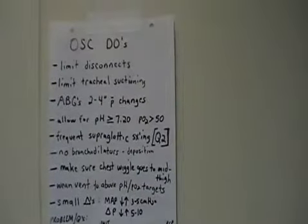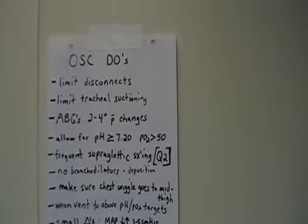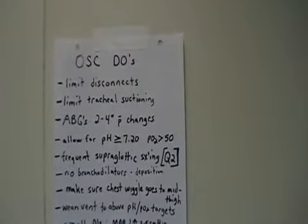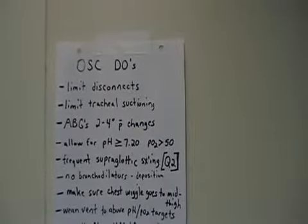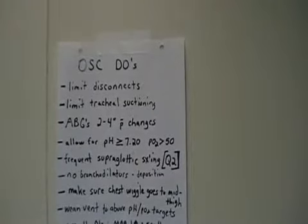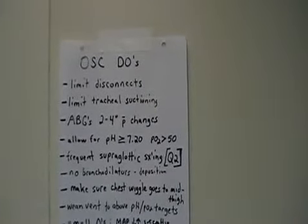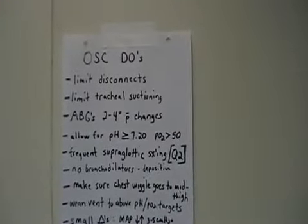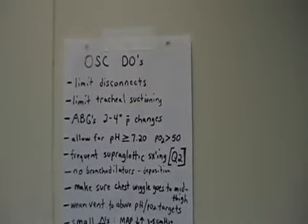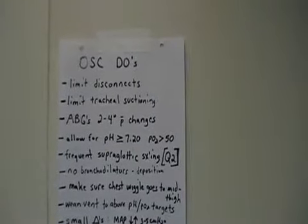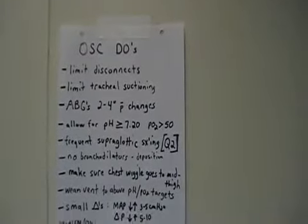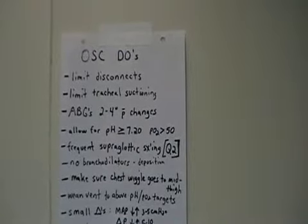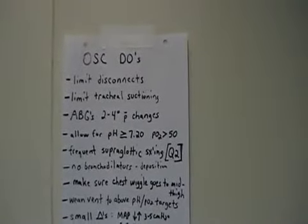Tips on the oscillator: you want to limit your disconnects because every time you disconnect, you de-recruit the lung — it happens immediately. Same with tracheal suctioning; only do it once per shift maybe, but I recommend doing it when there are patient changes like decreasing delta P or decreasing saturation that may be the cause. For ABGs, when you make a change, wait a few hours before getting a gas — otherwise you could be chasing your tail.